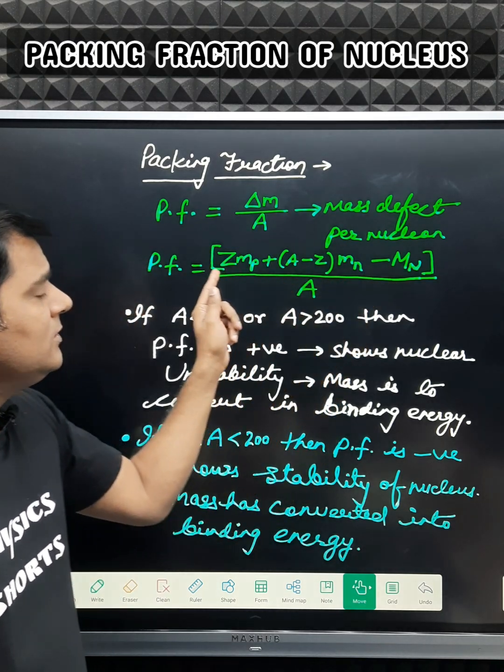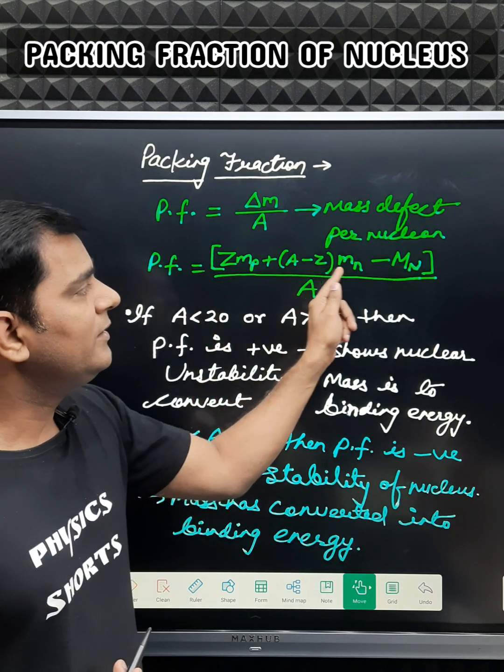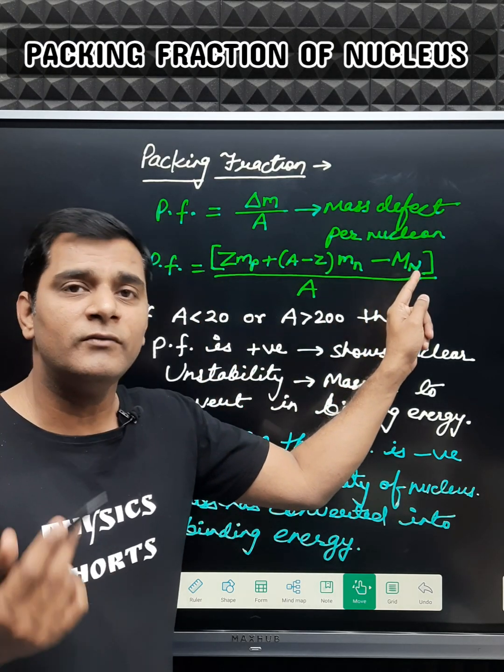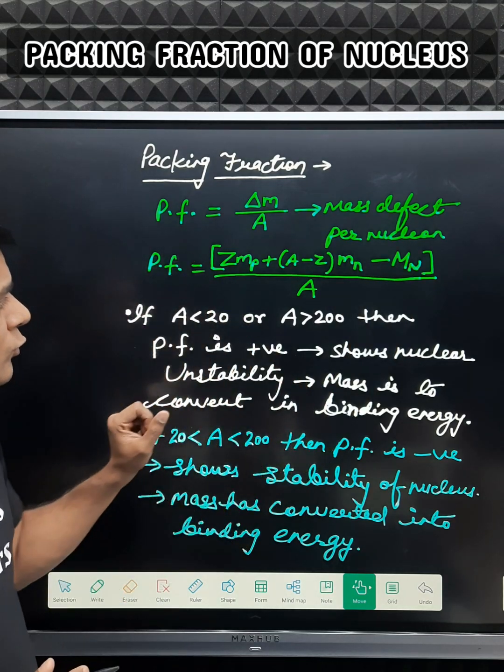defect Δm, then it is the sum of masses of the constituent nucleons, which is Z*mp plus (A-Z)*mn, and the rest mass of the stable nucleus is subtracted, minus Mn. There are two significances